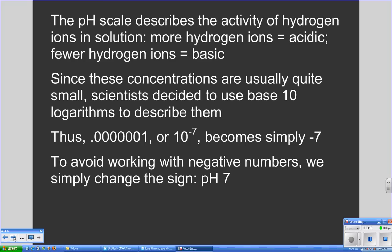In the pH scale, we use negative base 10 logarithms, so that an unwieldy number like 0.000001 or 10 to the minus 7th moles per liter of hydrogen ions becomes minus 7. Then we reverse the sign of the log from negative to positive, making the pH equal to 7.